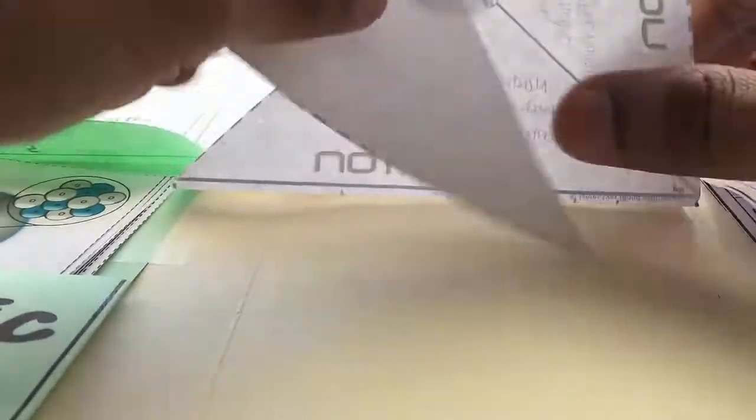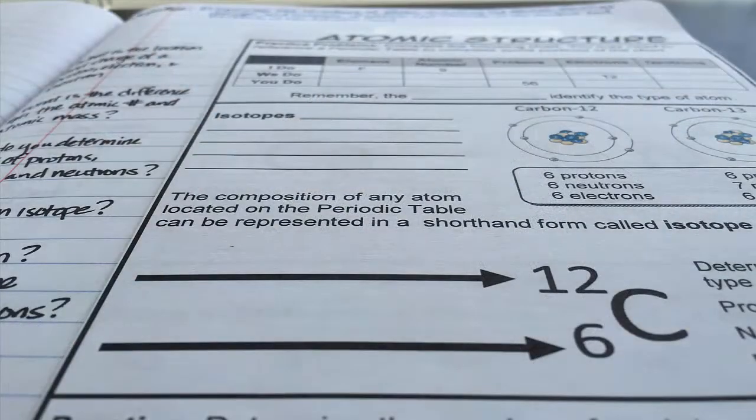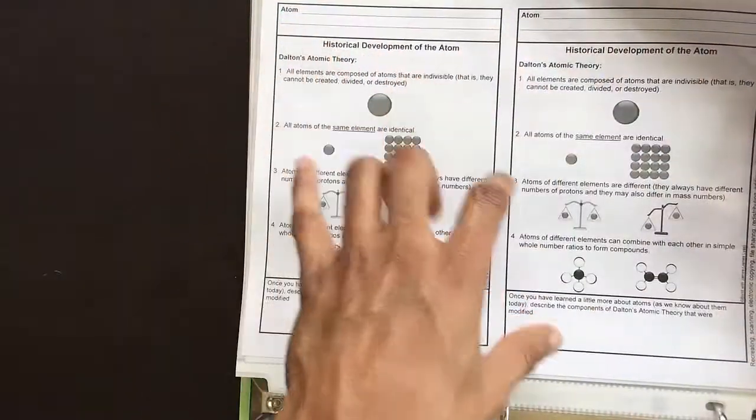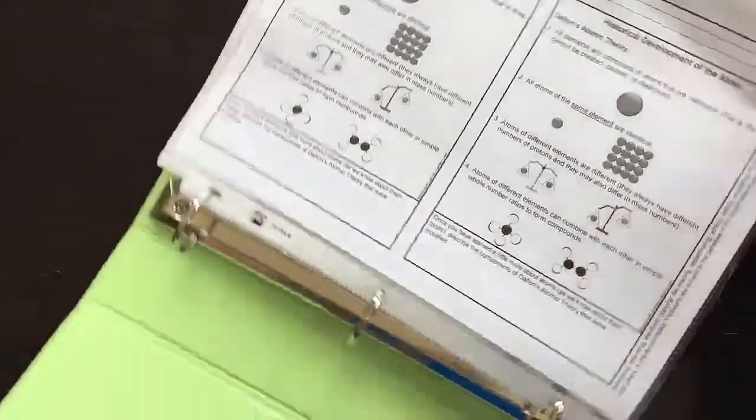These are intended to go into a composition notebook or a spiral notebook, and that's why on one sheet of paper you'll have two student notes. So they can just cut down the middle and you can share and save paper that way.